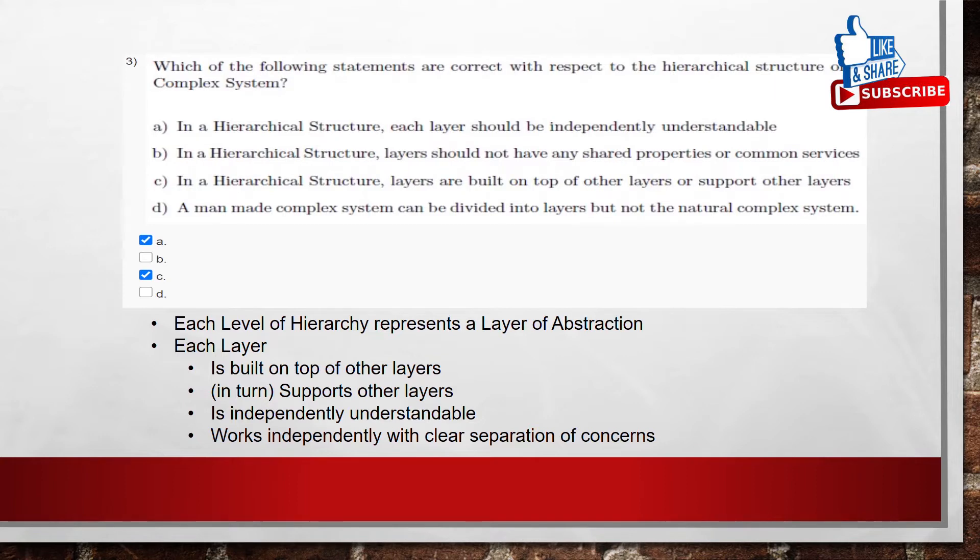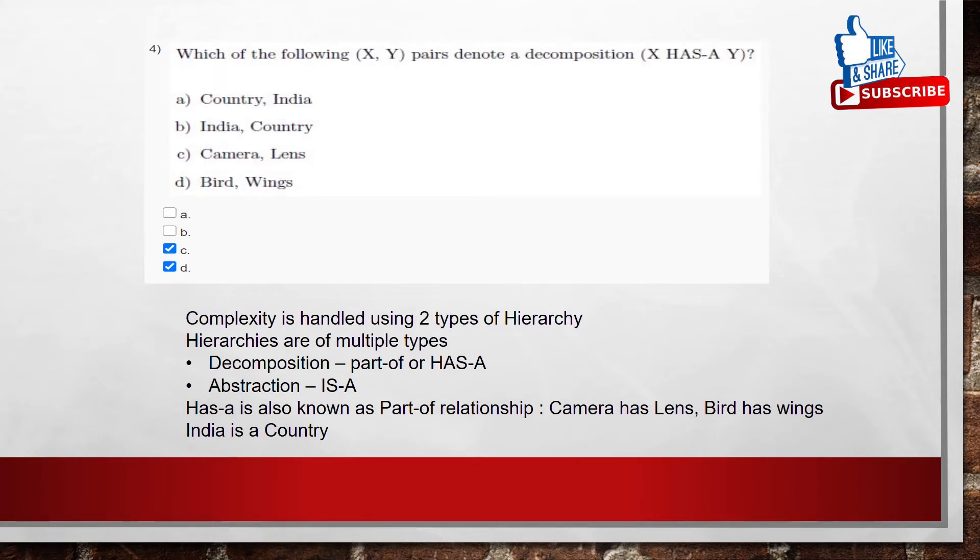Option D. Coming to the option D, a man-made complex system can be divided into layers but not the natural complex system. In the universe, every complex system is a complex system. Whether it is a man-made or natural system, everything will be divided into layers. So, the option D is not correct.